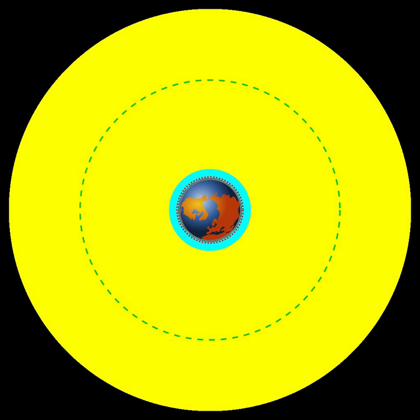Geostationary or geosynchronous transfer orbit, GTO, an elliptic orbit where the perigee is at the altitude of a low Earth orbit and the apogee at the altitude of a geostationary orbit.